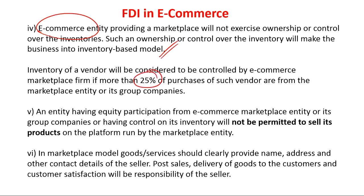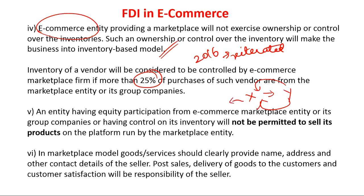The 25% rule from the 2016 guideline has been reiterated. Also, if an e-commerce company X holds equity shares in another company Y, then company Y cannot sell its products on the e-commerce entity X, because X holding equity in Y amounts to X selling its own product — which violates the marketplace model of e-commerce.